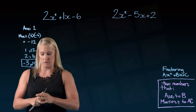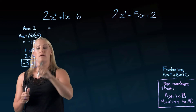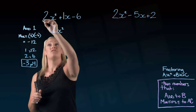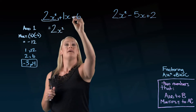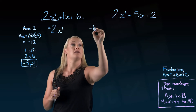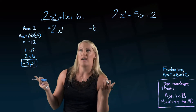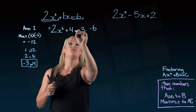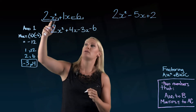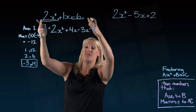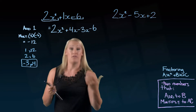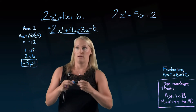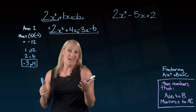Now let's use those numbers. To do the factoring, now that we have our two numbers, we're going to write our first value, 2x squared, and our last value, negative 6, just the way we see them. Then we write these two values — positive 4x and negative 3x. And if you look back up here, 4x subtract 3x is 1x, so I haven't changed that question, I've just expanded it a little bit. Now I'm going to do the factoring portion by grouping.